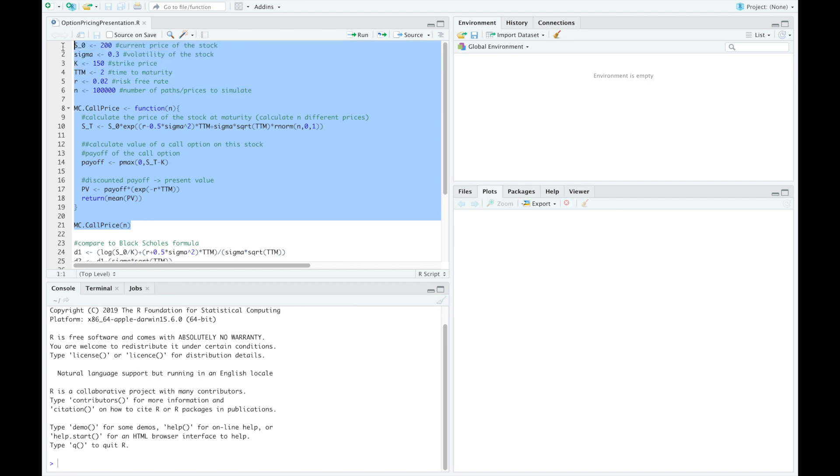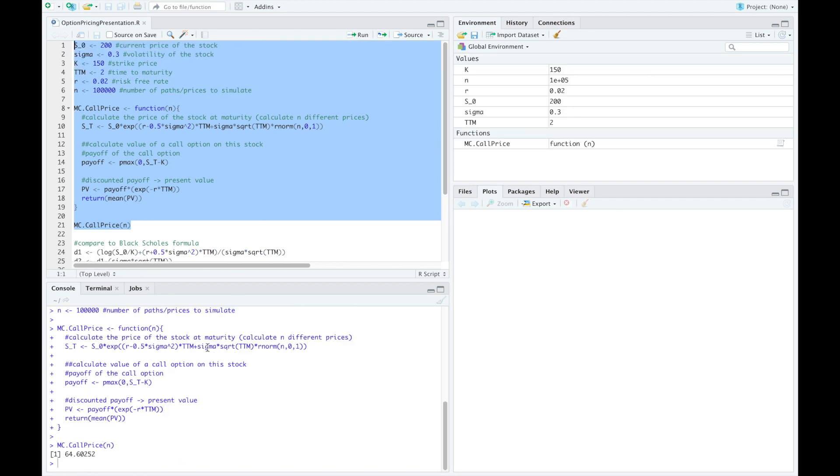So let's run this. In our case the fair price of a European option on this artificial stock would be 64.6.